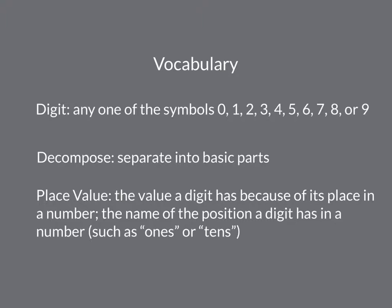Digit is any one of the symbols 0, 1, 2, 3, 4, 5, 6, 7, 8, or 9. To decompose means to separate into basic parts.